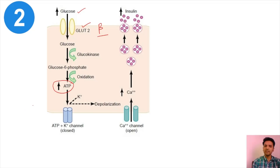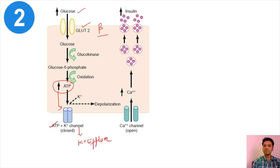Glucose enters the beta cell, is broken down by glycolysis, and ultimately yields ATP. The increase in ATP blocks an important channel called the ATP-sensitive potassium channel. This channel normally causes potassium efflux — pumping potassium from inside to outside the cell. When it is blocked, potassium accumulates inside the cell, increasing its intracellular concentration.